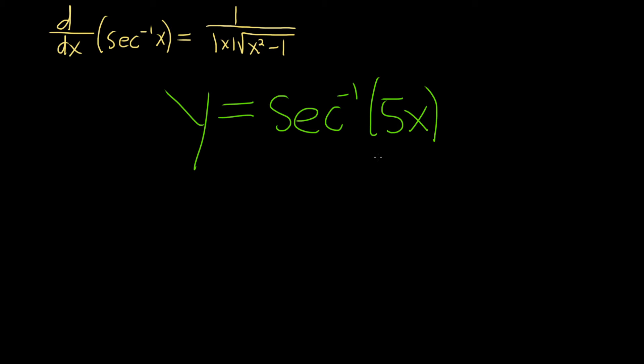So in this problem, our x is 5x. So all we have to do is use this formula, replace all of the x's with 5x, and then multiply by the derivative of the inside function, which is 5x. We're going to use the chain rule.